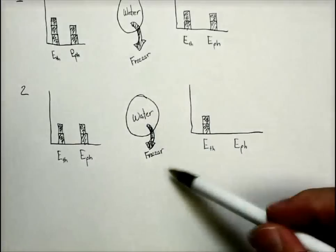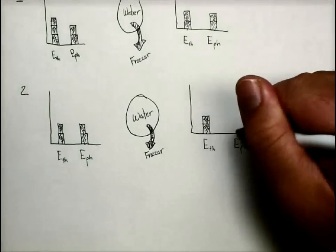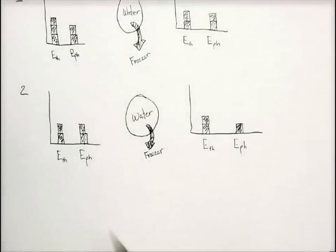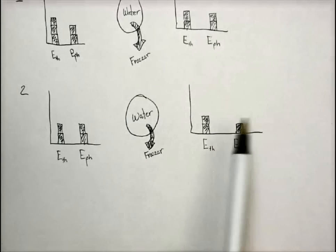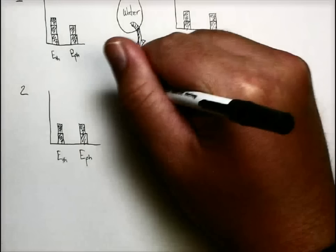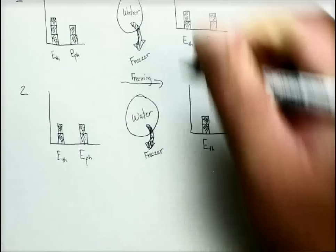So from this, since we've lost energy, and we know it didn't come from the thermal energy, the only place it can come from is the phase energy. So now our phase energy has been reduced from 2 blocks to 1 block, which shows that the water actually froze because it changed phase.